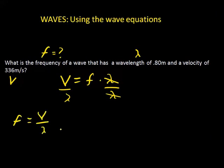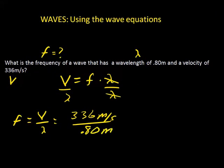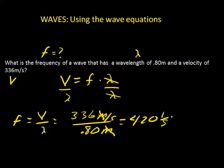Now we plug the numbers in. We have a velocity of 336 meters per second divided by the wavelength of 0.80 meters. When we divide that out we get 420, and the unit — meters factors out, leaving 1 over seconds, which is hertz. So our answer is 420 hertz.